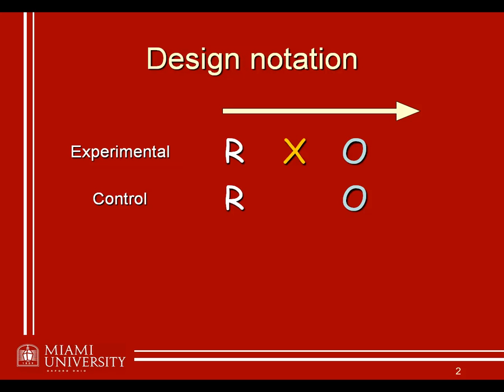If you understand this type of design, we can map out any specific design we want to instantiate by just thinking about where our X's and O's are. For example, we can add an additional pre-test observation to the experimental and control groups. So now we start with random assignment to one of two groups, take a baseline measurement before our manipulation, then instantiate the manipulation for the experimental group as before, and finally observe or measure behavior at the conclusion of the experiment.